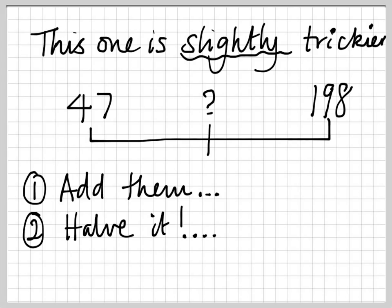Just having a look at one slightly trickier one. Let's go for halfway between 47 and 198. These are slightly harder because you've got one odd number and one even number. But let's follow Henry's method. Add them together.